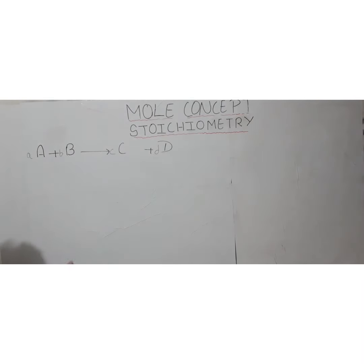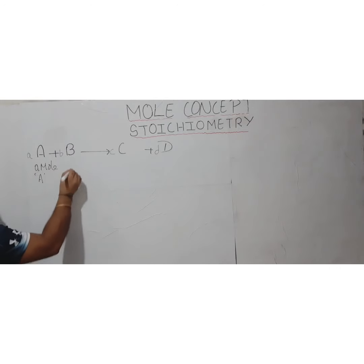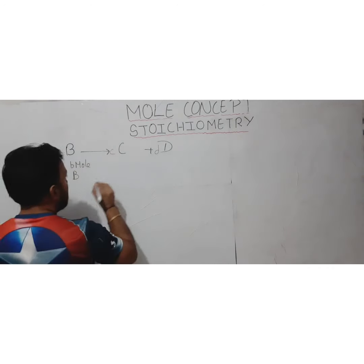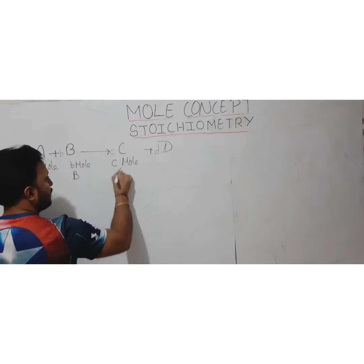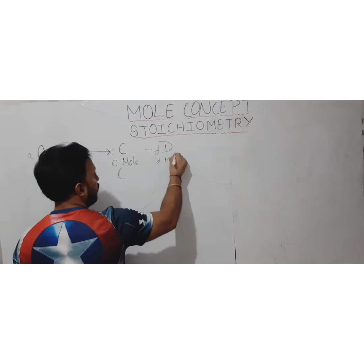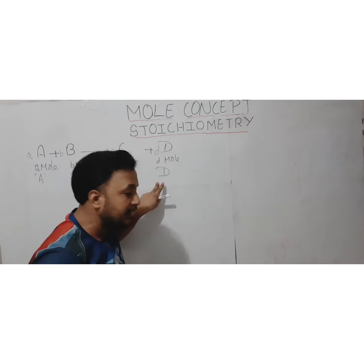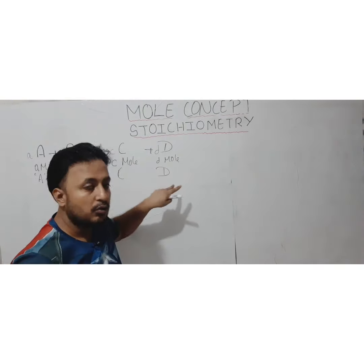So we can say: 'a' moles of reactant A react with 'b' moles of reactant B, and we get 'c' moles of product C and 'd' moles of product D. When this much quantity of reactants reacts, only then do we get this much quantity of product. That is what stoichiometry is all about — how the moles are related.